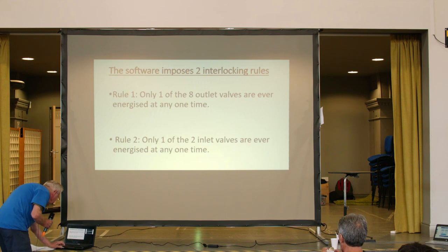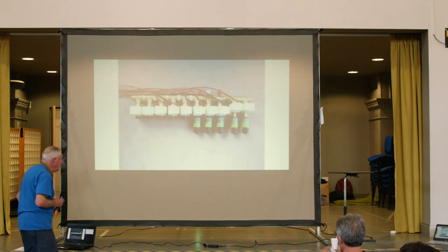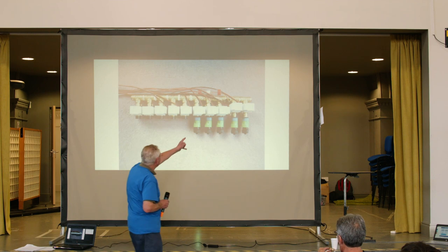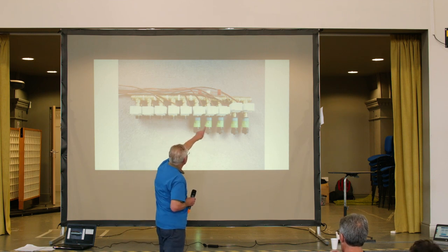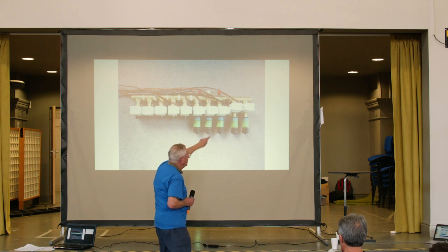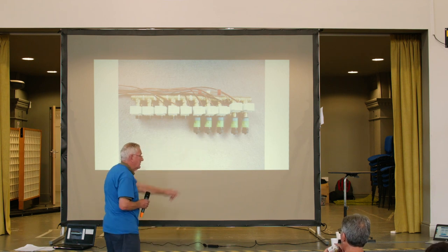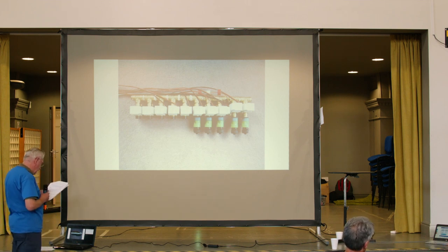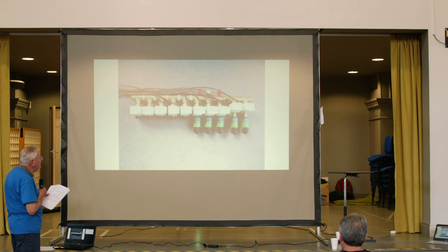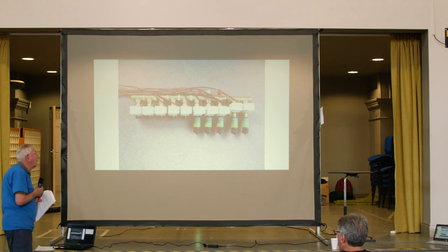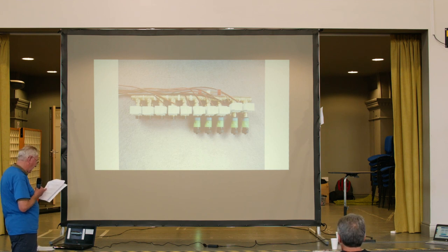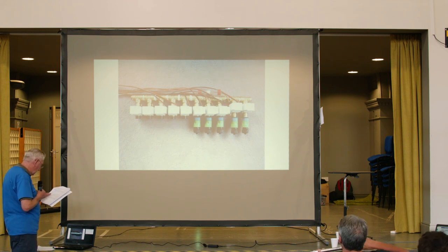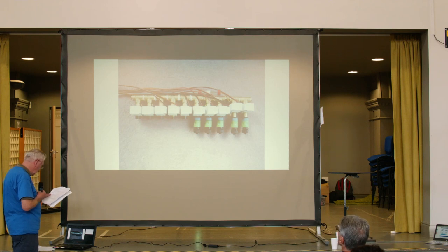There's also a flow sensor between those two inlet valves and the rest of them — you can't see it very well on here, but there's one to look at later. By positioning it where it is, the software always knows, when it's receiving a signal from the flow sensor, where the water's coming from and where it's going to, so it can be properly allocated to the correct outlet and source.